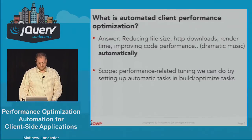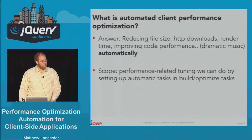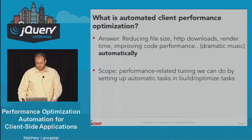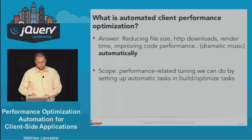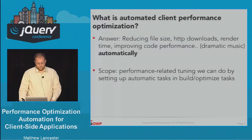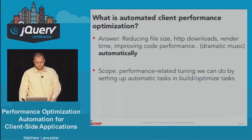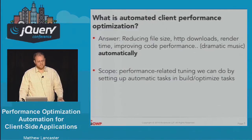So what is automated client performance optimization? The answer is the same stuff we've always been doing with optimization on the client side — just with a couple of wrinkles. Reducing file sizes, reducing the number of files that are downloaded, reducing render time, improving the performance of the code — automatically. The scope of this activity is doing performance-related tuning and setting those activities up into a build task using a task automation or build automation tool.